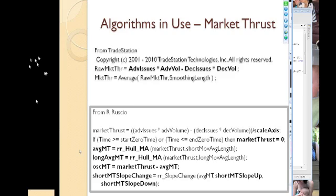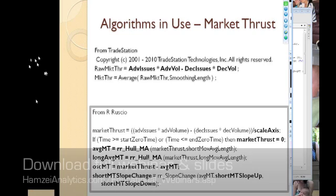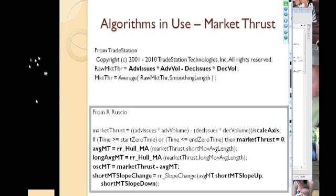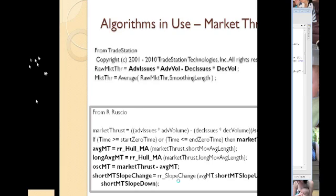There's a long moving average that I use because I was interested in crossovers once upon a time — that didn't work too well, but you'll see it on some charts. Then there's an oscillator: the difference between the averages for Market Thrust. I wrote slope-change functions so I didn't have to repeatedly do greater-than/less-than logic. This tells you whether the slope is going up or down.